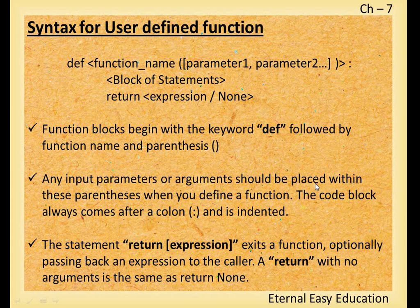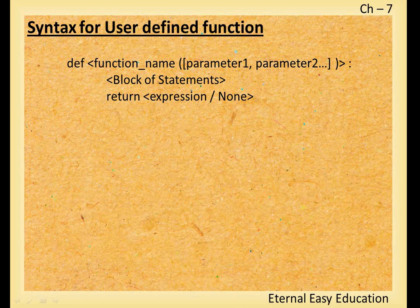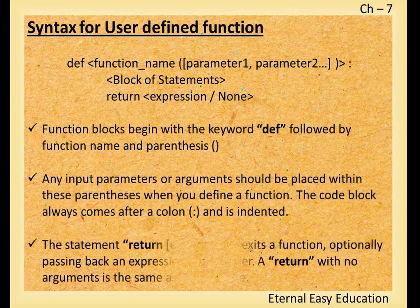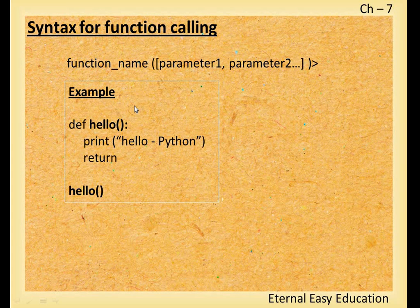Any input parameters or arguments should be placed within the parentheses when you define a function. We can give any number of parameters or arguments. A return expression exits the function, optionally passing back a value to the caller. A return with no arguments is the same as return None. Here is an example: 'def hello(): print("Hello Python") return' — the part from def to return is the function definition, and 'hello()' is the function call.